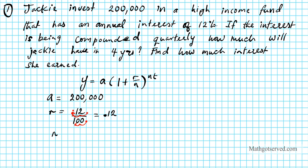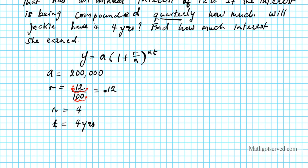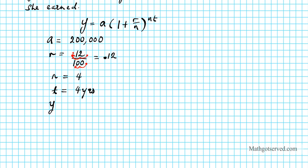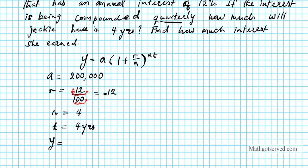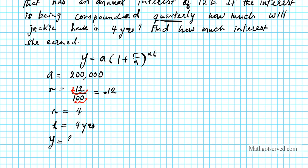How many times is it being compounded per period? It's compounded quarterly, which means four times. Every quarter means every three months. t is four years. And then y, the final amount that she has after four years, is exactly what we're looking for.